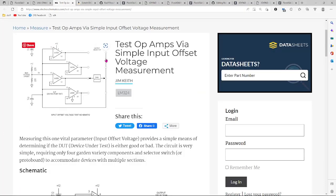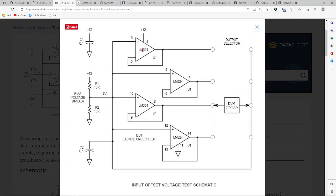The design is based on this article: test op amps via simple input offset voltage measurement. It does have a caveat that it won't measure below 100 microvolts, but the test method is really simple. Basically the op amps get set as unity gain buffers with just wires attached for the negative feedback.